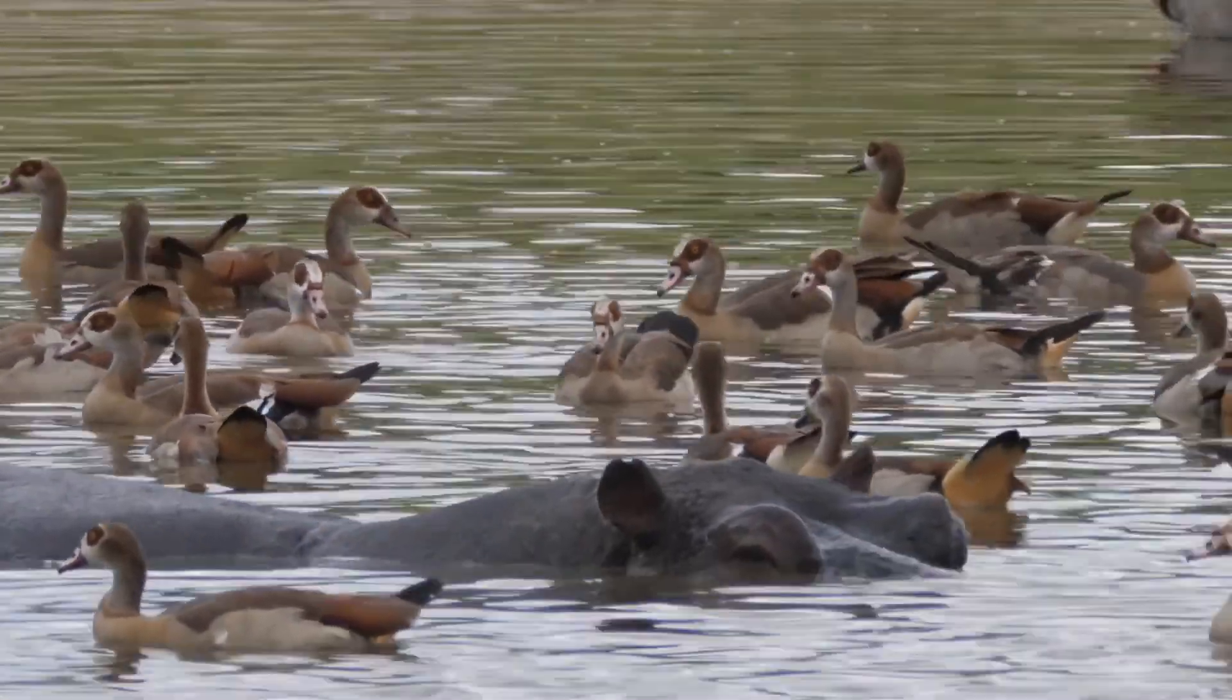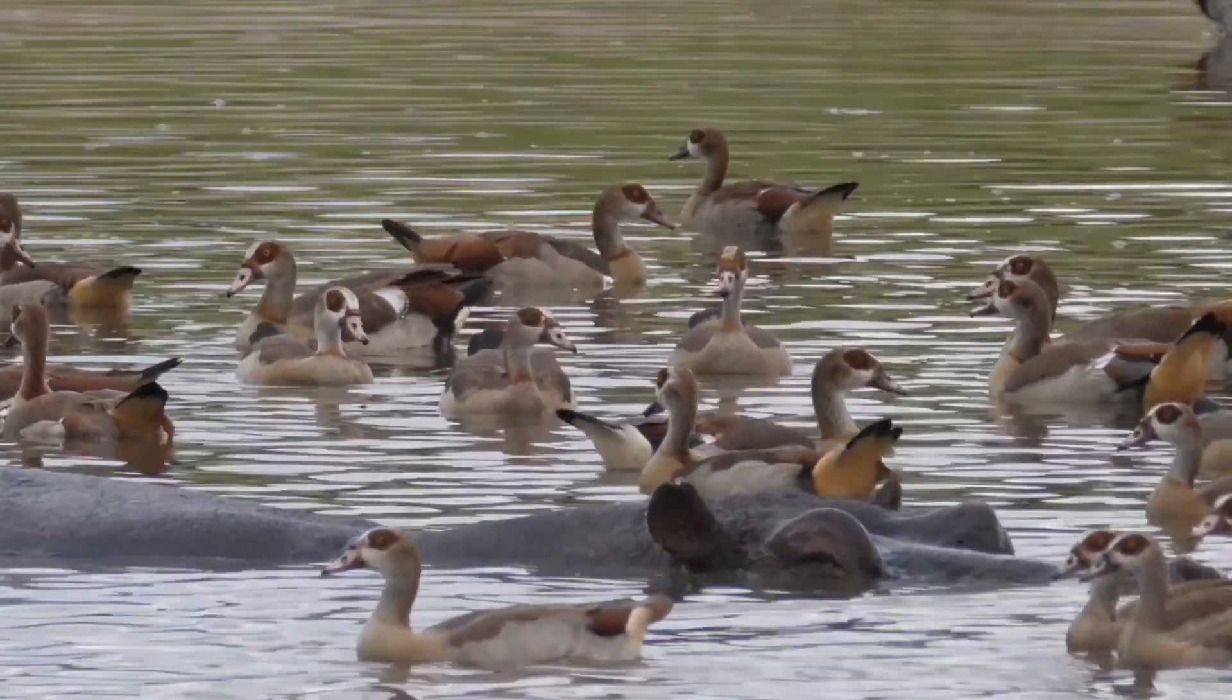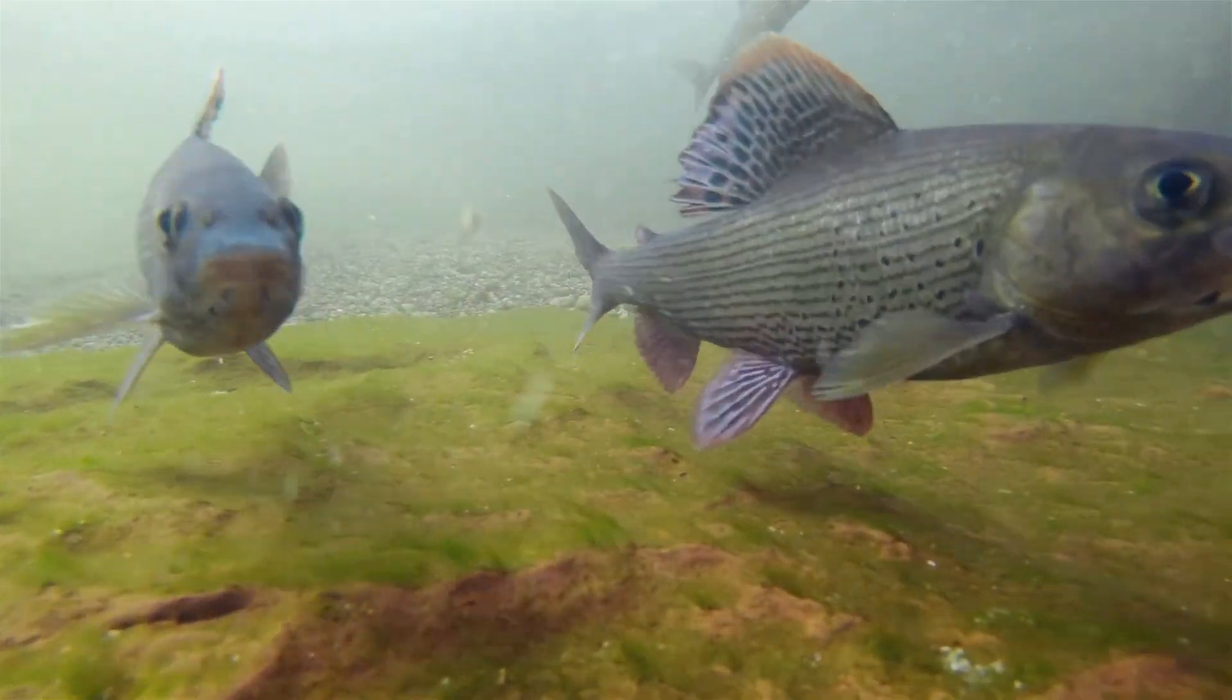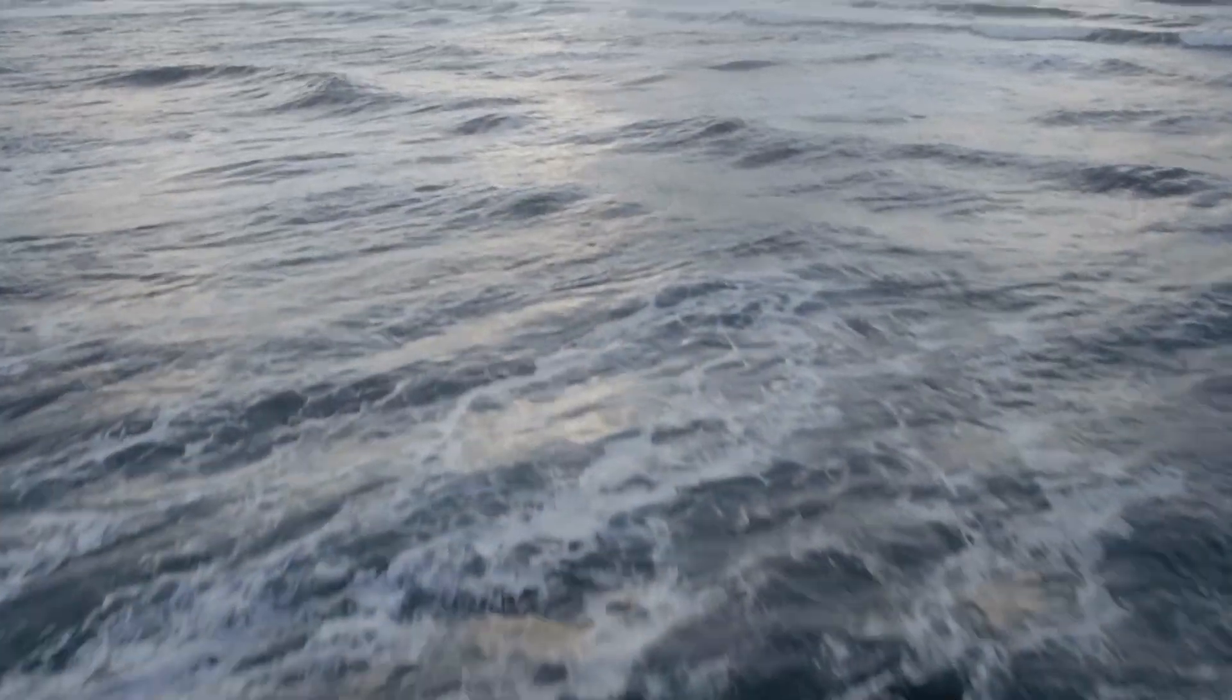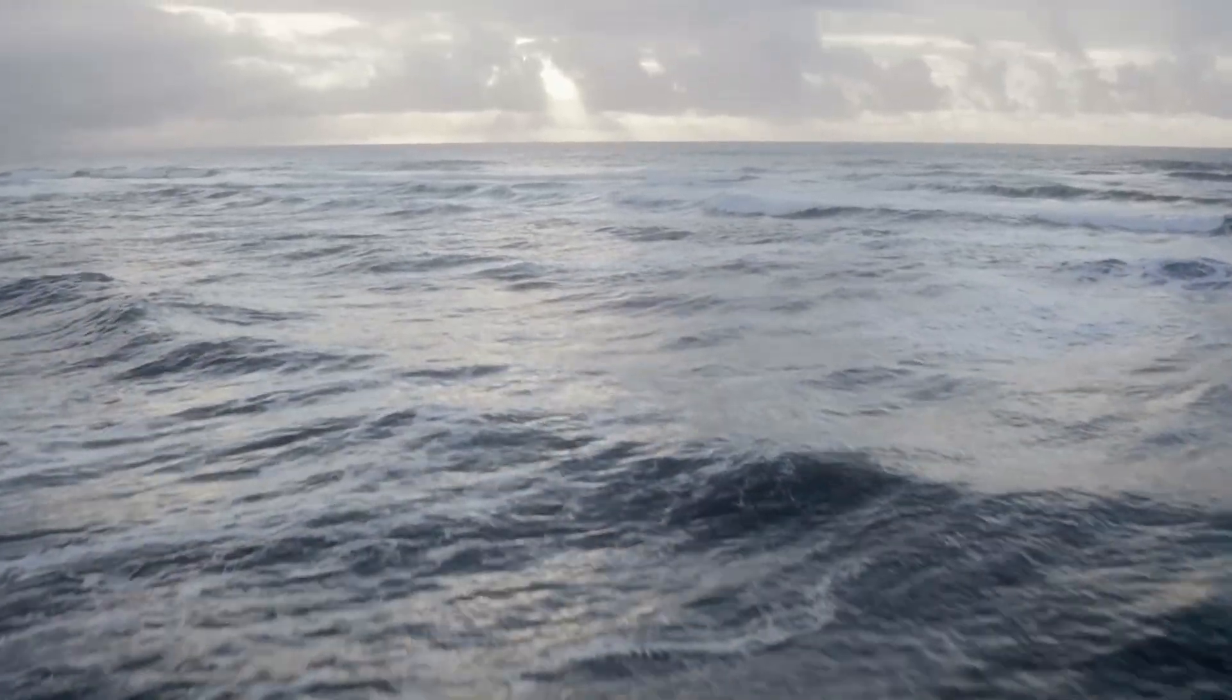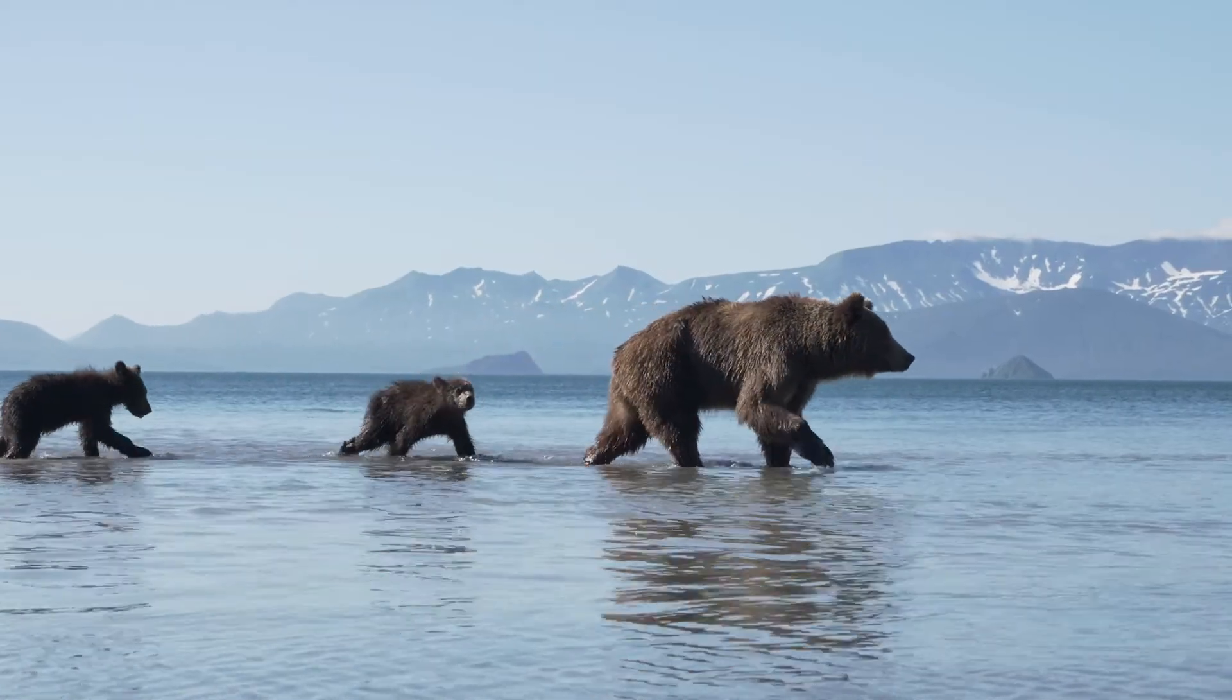One of these factors is the presence of water in a liquid state, essential for living things to survive. Earth's surface, covered by vast oceans, rivers and lakes, is markedly different from the other planets in our Solar System.